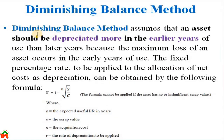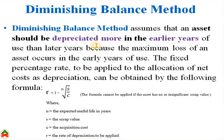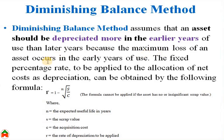The diminishing balance method assumes that an asset should be depreciated more in the earlier years, because it is assumed that the maximum loss of an asset occurs in the early years of use.